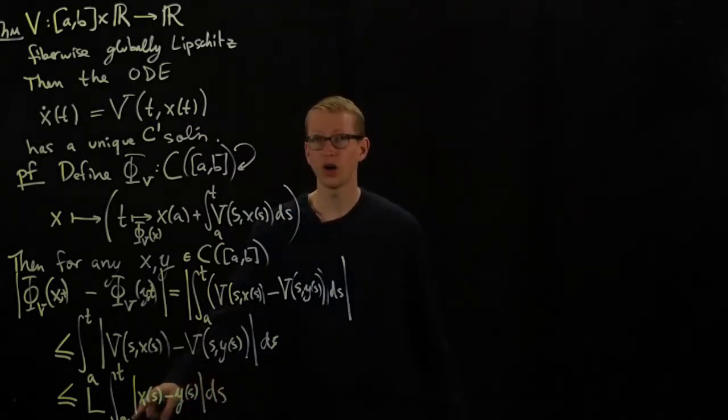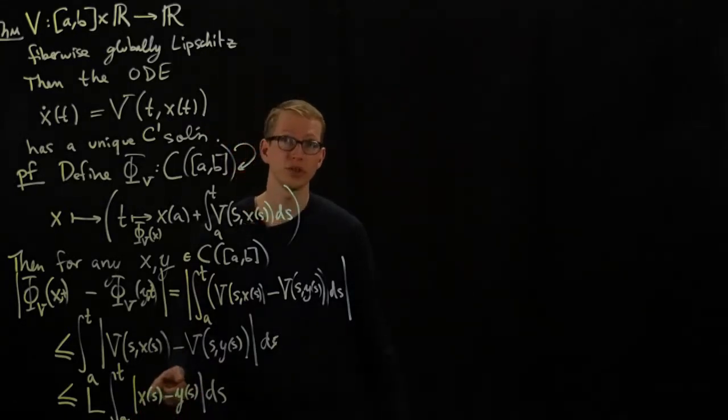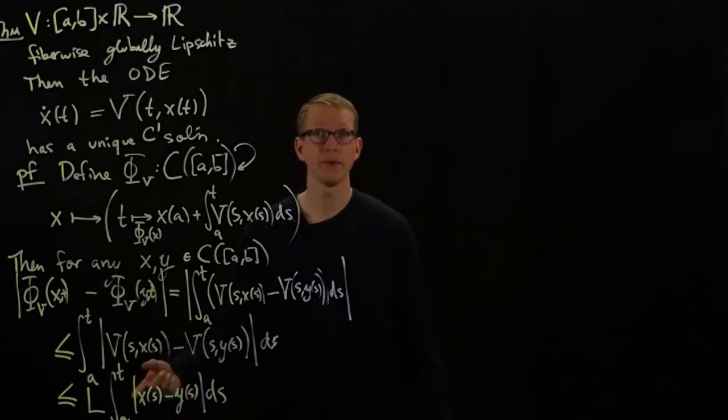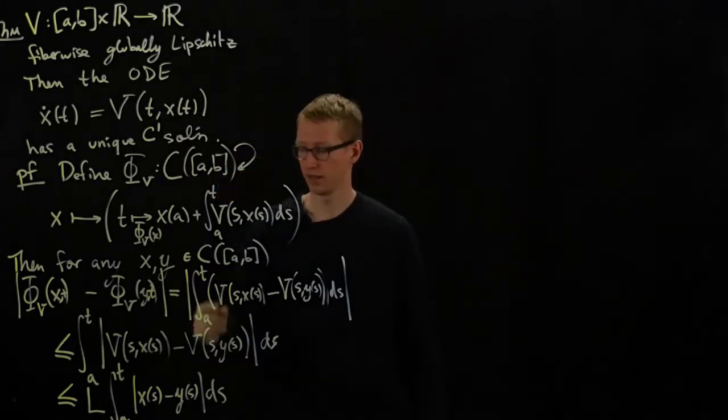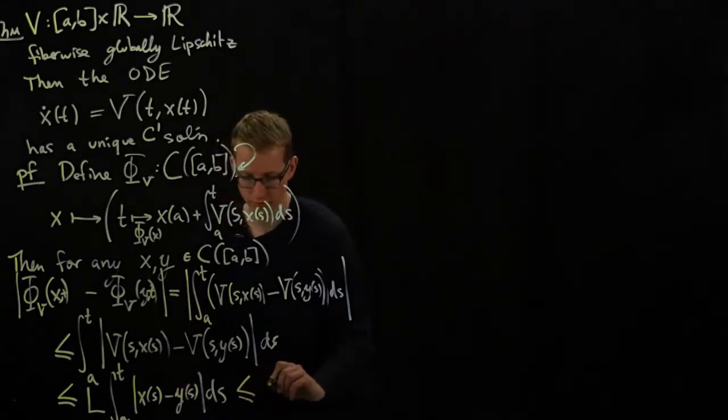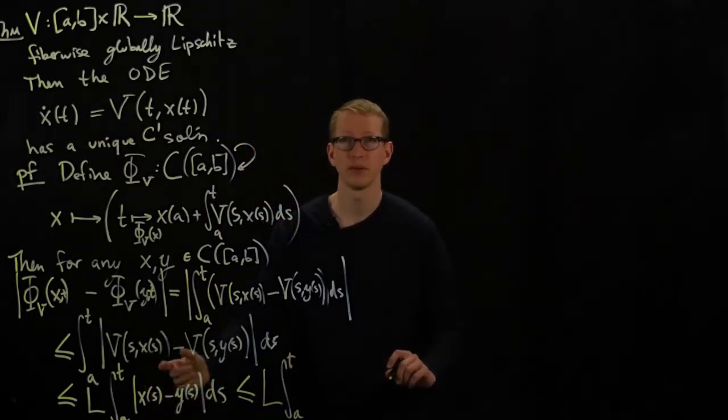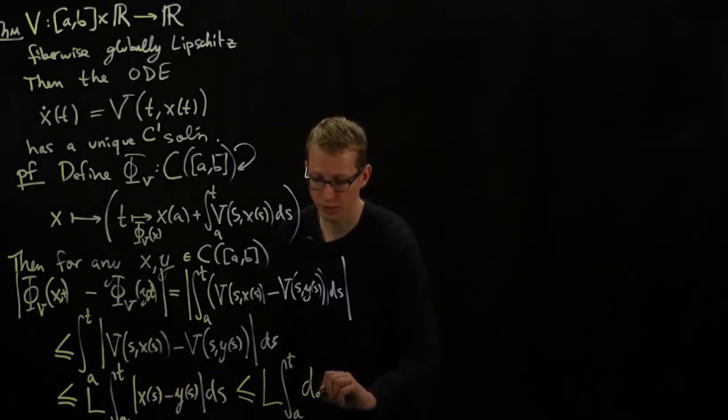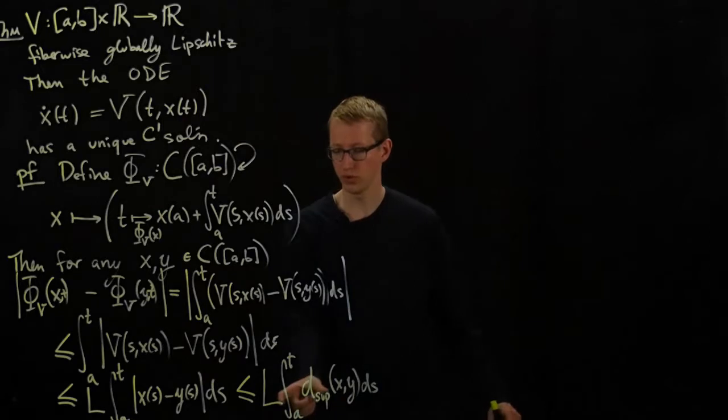Now, because our domain is compact, this distance is less than or equal to the supremum of all such distances over the entire domain on which they're defined. But again, by compactness, that supremum is always achieved, and it's always finite. Therefore, this can be replaced by L integral from A to T, the max over all s. But the supremum over all s is exactly the distance between x and y, with respect to the supremum norm.